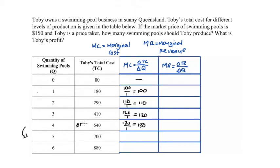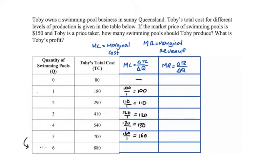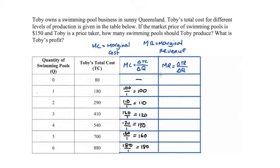For the fifth unit, the marginal cost is 160 because total cost changes from 540 to 700, a difference of 160, with a change in quantity of 1. For the sixth swimming pool, the marginal cost is 880 minus 700, which is 180, with a change in quantity of 1, so marginal cost is 180. That covers the marginal cost for each possible level of production.